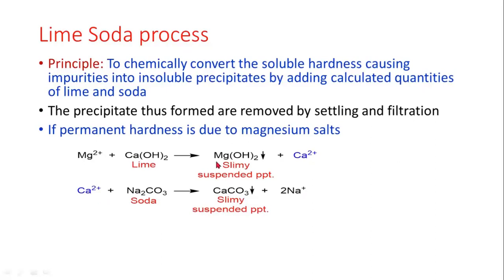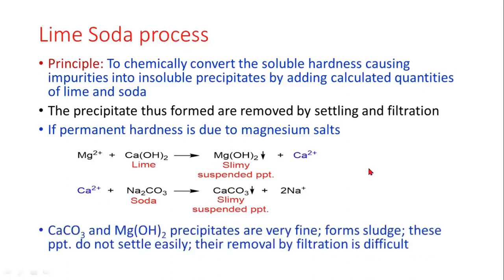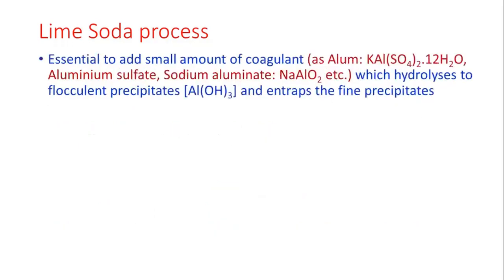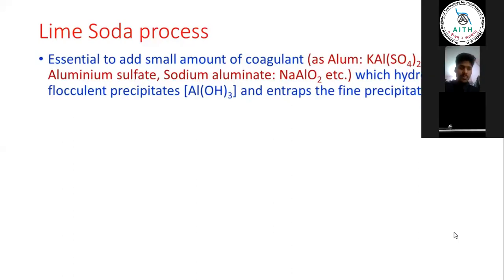In the lime soda process, calcium carbonate and magnesium hydroxide precipitates are formed as suspended material. These precipitates — calcium carbonate and magnesium hydroxide — do not settle easily, so we remove them by the filtration method. Some coagulants such as alum or sodium aluminate are used, which convert the fine particles into hydroxide and help them settle as distinct precipitates.